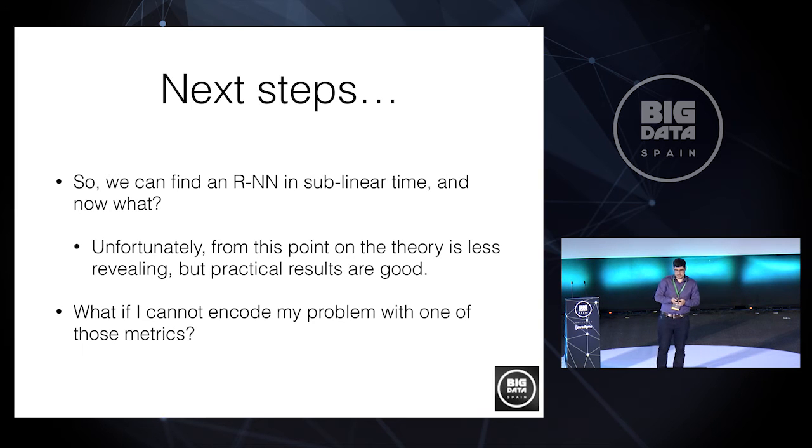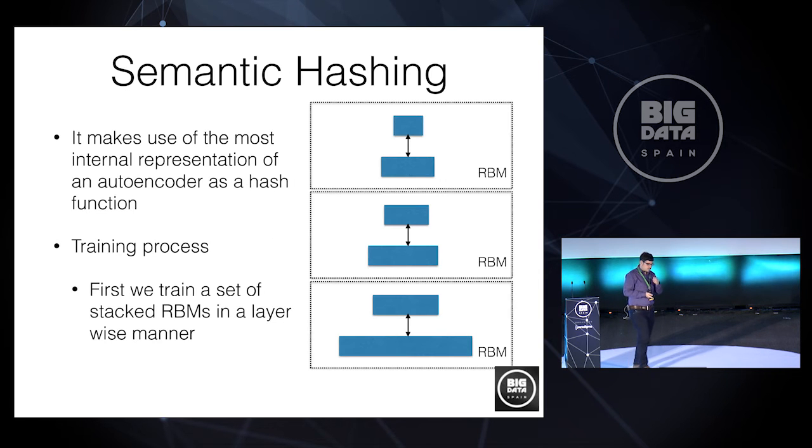These proofs of bounds can happen because these hashing functions are very tailored to a metric. So for example, Euclidean space, Hamming space, you need to have a definition of a metric. But sometimes defining this metric of putting your problem in a metric is complicated. So it's difficult to encode. So what about if I cannot encode my problem in one of those metrics?